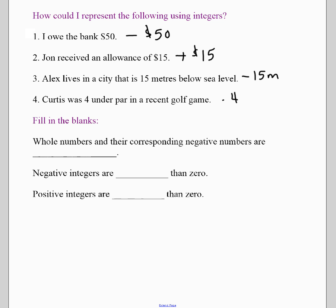So let's look at some of the language that we've already been introduced to. So whole numbers and their corresponding negative numbers are called opposites. Again, five and negative five. Negative integers are less than zero, and positive integers are more than zero.